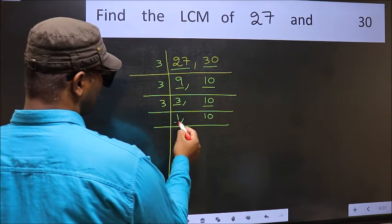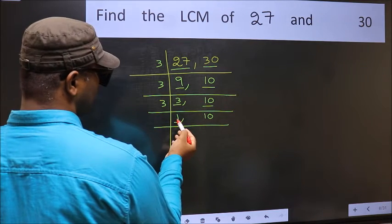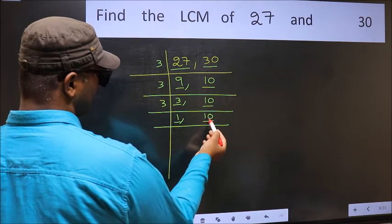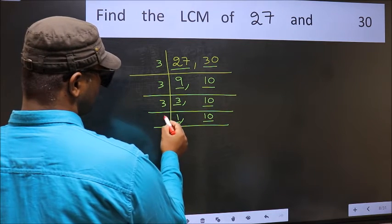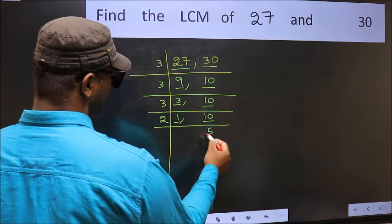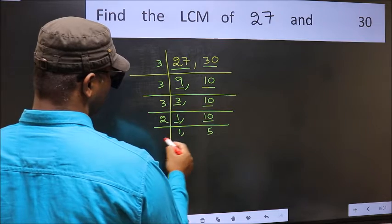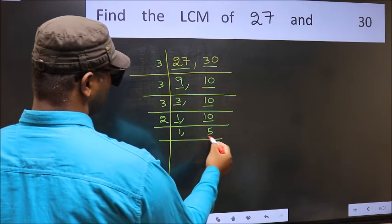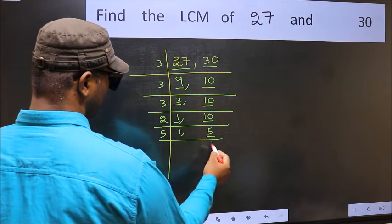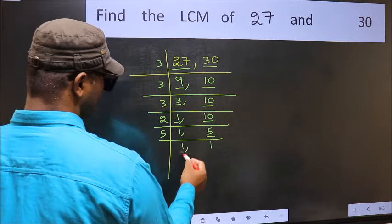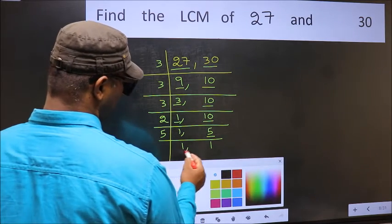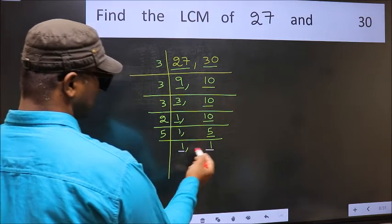Now we got 1 here, so focus on to the next number, 10. 10 is 2 fives, so we write 10. Now here we have 5 — 5 is a prime number, so 5 ones is 5. We got 1 in both places.